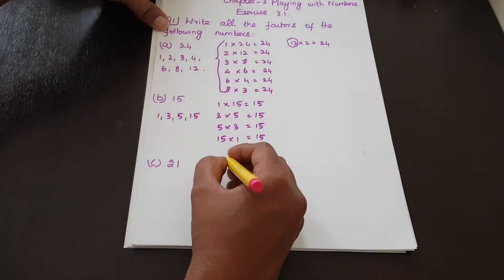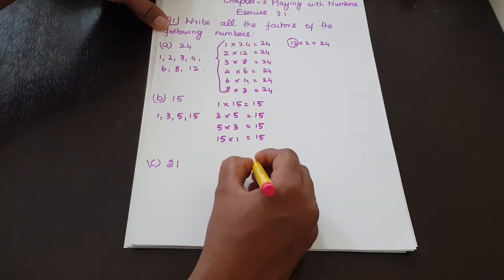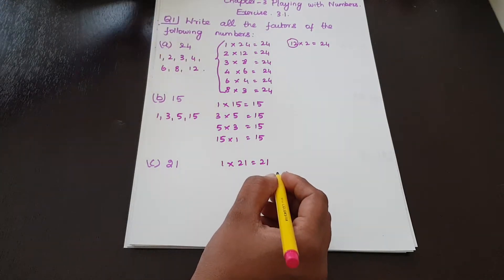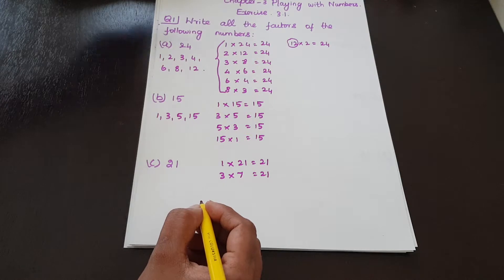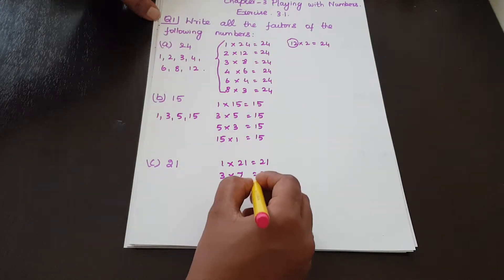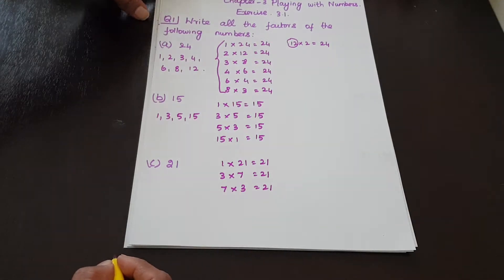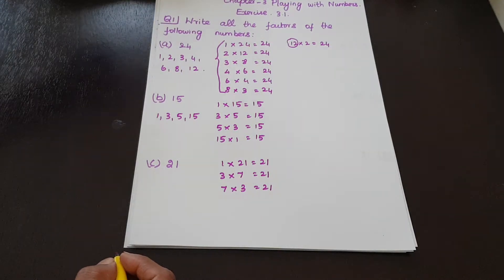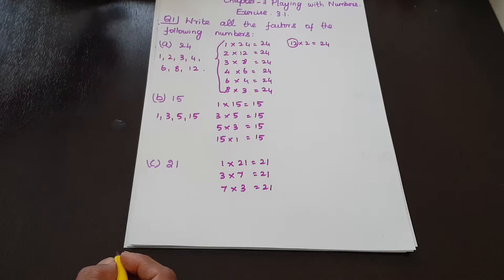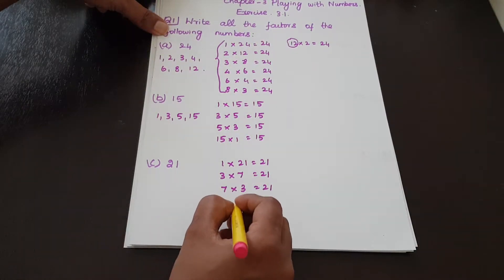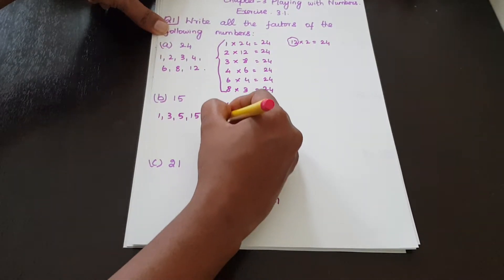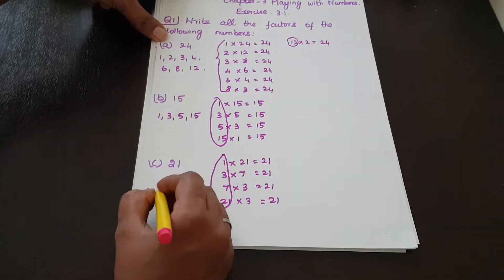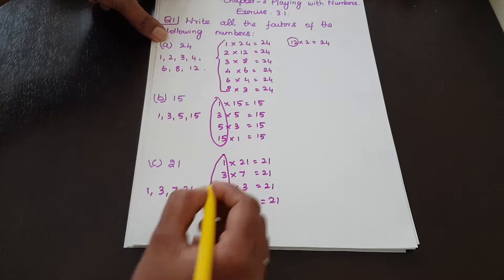Next, 21. 1 into 21 equals 21. 2 does not go. 3 into 7 equals 21. 4, 5, 6 do not go. 7 into 3 equals 21. 8, 9, 10, 11, 12, 13, 14, 15, 16, 17, 18, 19, 20 do not go. 21 into 1 equals 21. So the factors of 21 are: 1, 3, 7, 21.